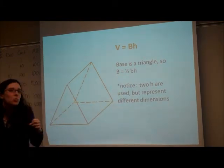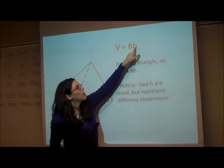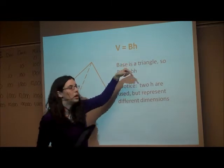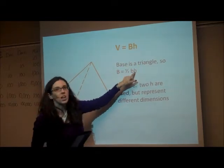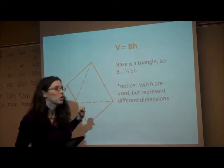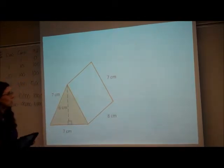Now, this is where it gets a little confusing, because we have a height for the triangle area, and then we have a height for the prism volume. Remember, this is the height of the prism, this is the height of the triangle. So you've got to remember to keep them separate. So let's look at this one.